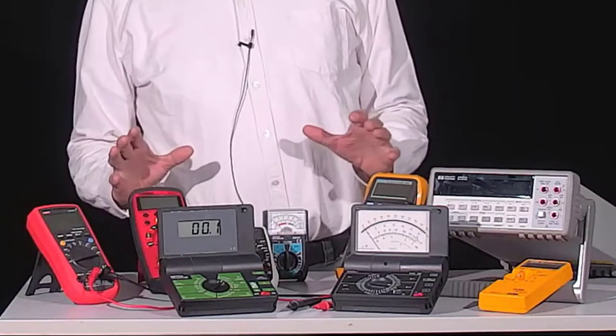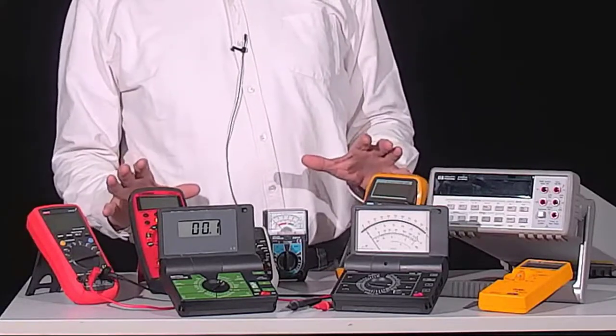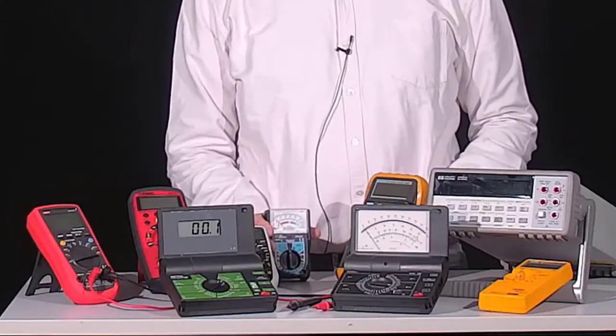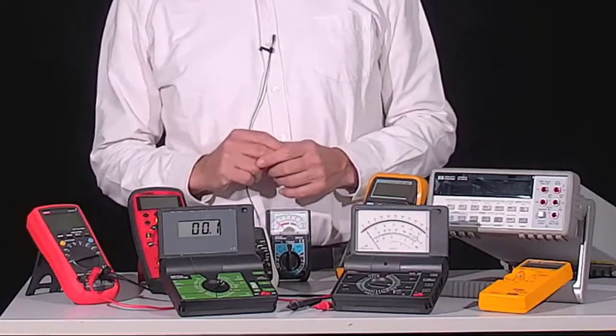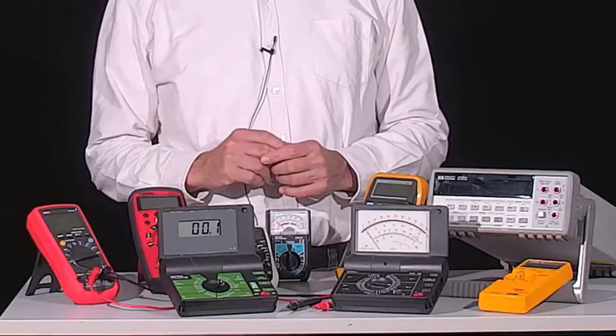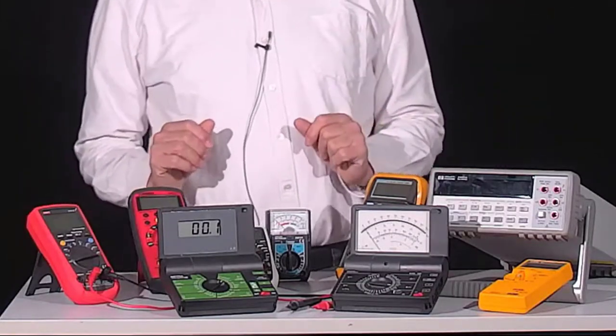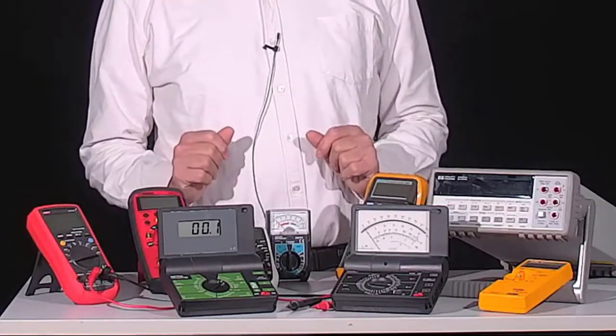Multimeters are available as battery operated handheld devices, in a very simple and inexpensive form as a desktop device, and in the laboratories as a structural device. The basic structure and operation of all instruments is almost identical.